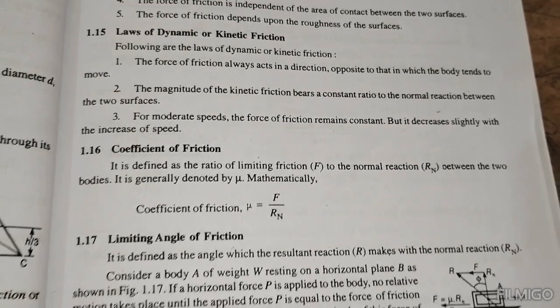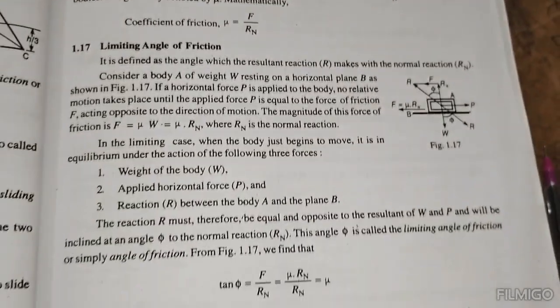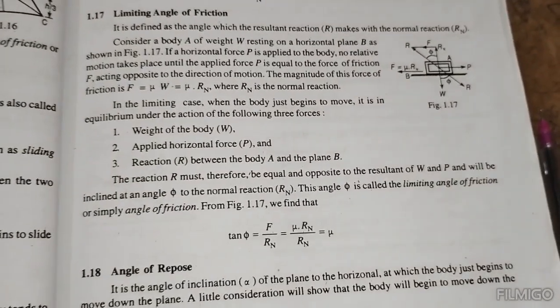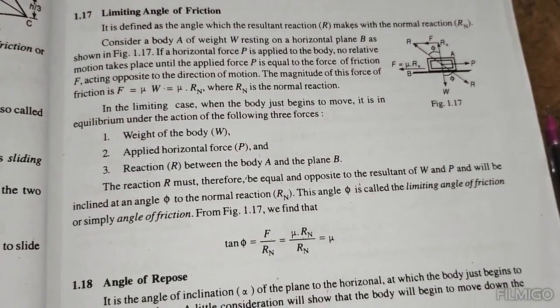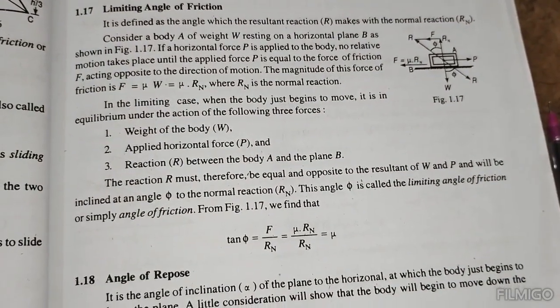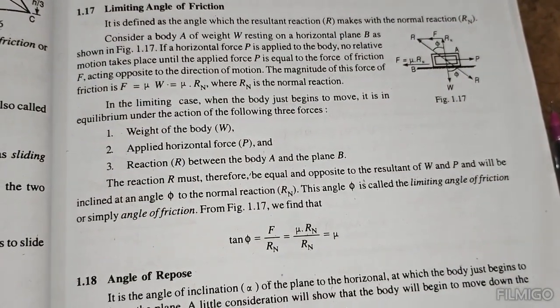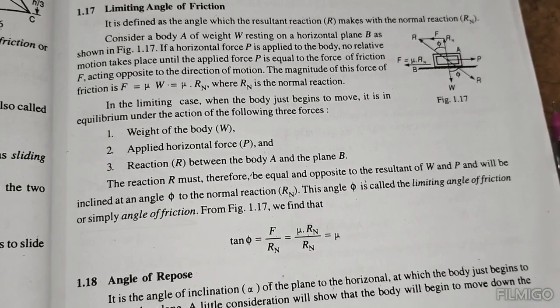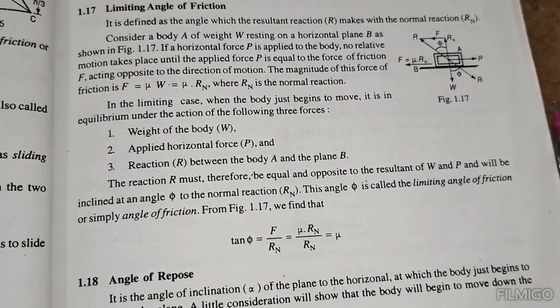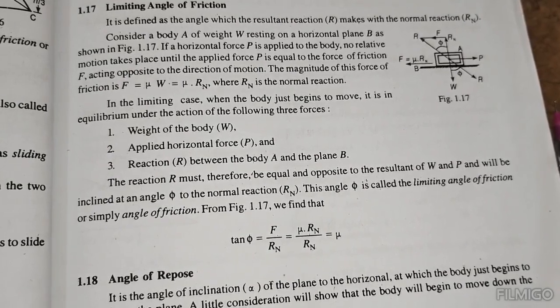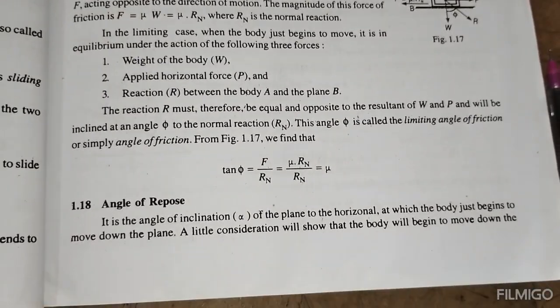The coefficient of friction mu equals tan phi, where phi is the angle of friction. The friction force F equals mu times the normal reaction R_N. This gives F by R_N equals mu, a constant ratio.